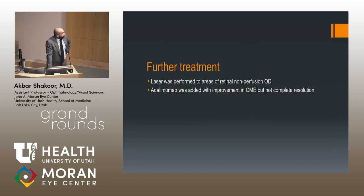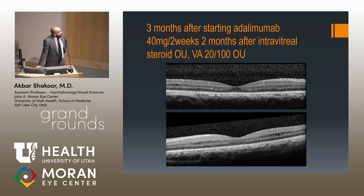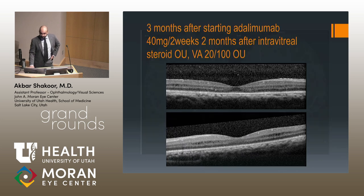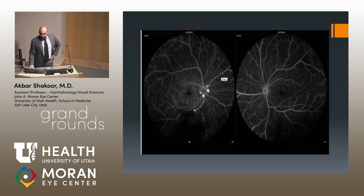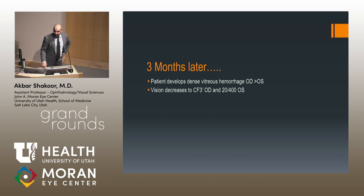Laser was performed to areas of retinal non-perfusion in the right eye. We started adalimumab (Humira), with improvement in CME but not complete resolution. Three months after starting Humira at 40 mg every two weeks, and two months after intravitreal steroid in both eyes, this was the first time in her entire treatment course that the CME mostly resolved. Her vision improved to 20/100, likely limited by ellipsoid zone loss in both eyes from chronic CME. Still, areas of neovascularization remained, and three months later she presented with dense vitreous hemorrhage in the right eye more than the left, with vision decreasing to 20/400 in the left and counting fingers at three feet in the right.